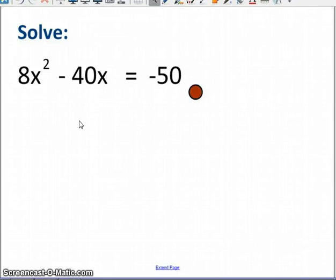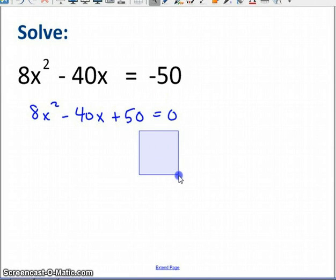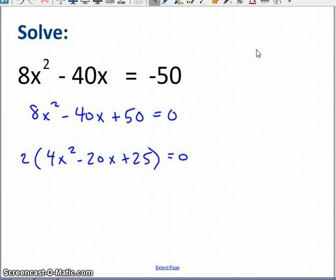I'm going to assume that you've worked on this one. What you would want to do first is you'd want to move that 50 over so you've set the trinomial equal to 0. Now, the next step is to see if there's anything that you can factor out of everything. And certainly there is. There's that 2 that you can pull out. So now I've got 2 times, in parens here, a simpler trinomial.